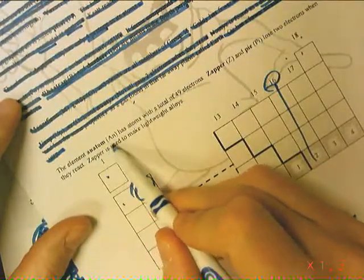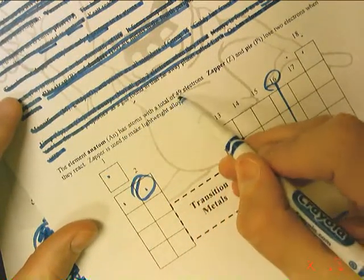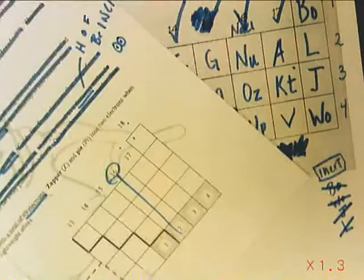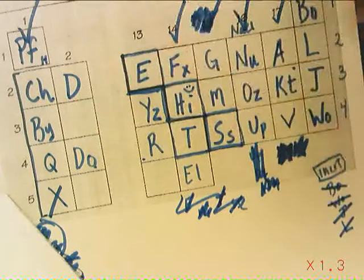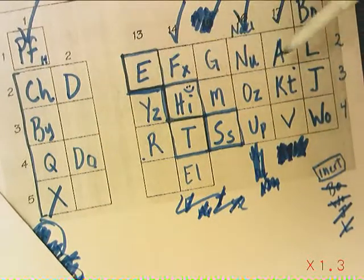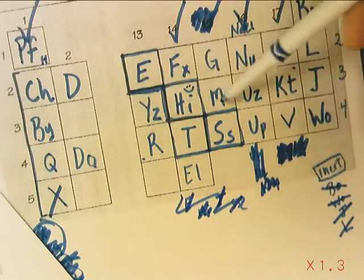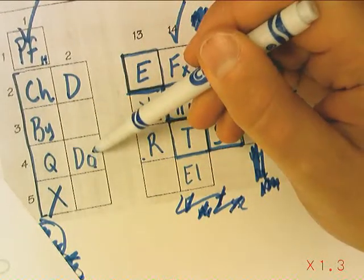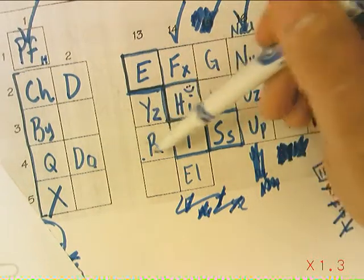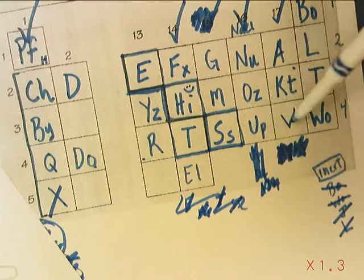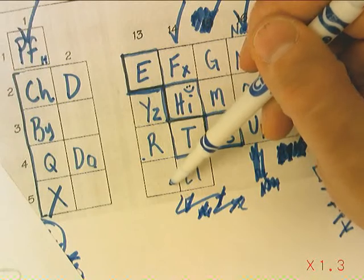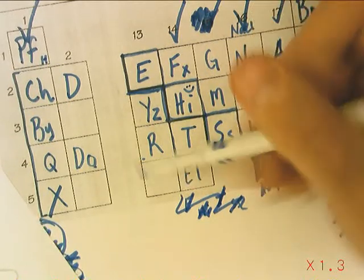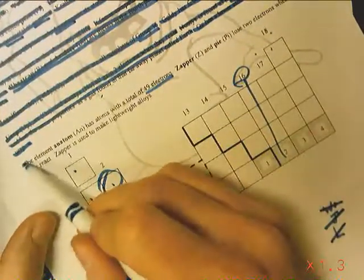The element ANATOM has atoms with a total of 49 electrons. That would mean 49 protons too. So it's going to be down here at the bottom. I guess I could count my way: 1, 2, 3, 4, 5, 6, 7, 8, 9, 10, 11, 12, 13, 14, 15, 16, 17, 18, 19, 20, plus 10 transition metals is 30, 31, 32, 33, 34, 35, 36, 37, 38, plus another 10 is 48, 49. I guess this is AN. This seemed too hard to figure out.